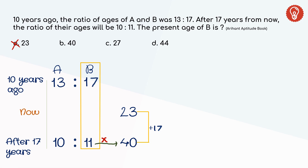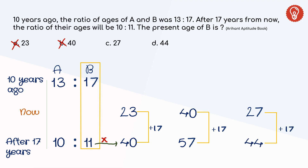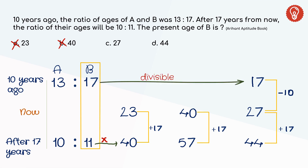From the second option, say B is 40 today — after 17 years he will be 57. 57 is not divisible by 11, so 40 is also wrong. Moving to 27: we cannot declare 27 the right answer at this point — we need to check the other condition as well. If he is 27 today, 10 years ago he was 17. 17 is divisible by 17, hence 27 satisfies both conditions. Option C is the right answer.